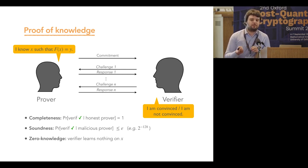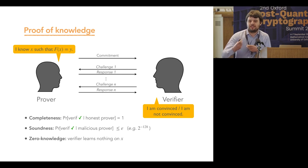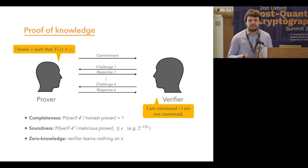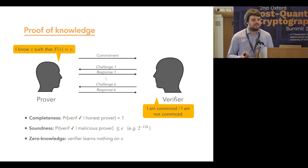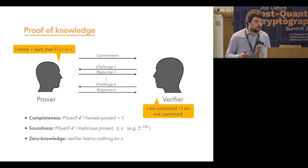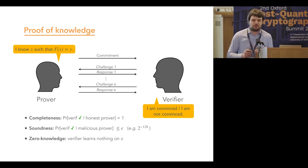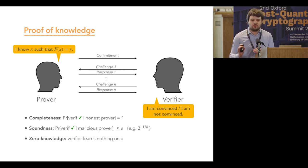In the interaction, the first message is often called a commitment, then there are challenges from the verifier and zero or more responses. Such an interactive protocol must verify three properties: completeness — if the prover is honest and knows a preimage X, the verifier must be convinced at the end; soundness — if the prover is malicious and does not know such a preimage, the verifier must not be convinced, or only with negligible probability; and the zero-knowledge property — at the end of the protocol, the verifier learns nothing about the secret itself.